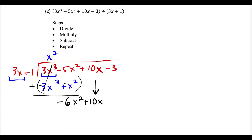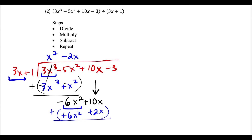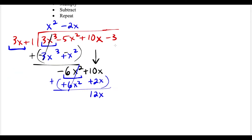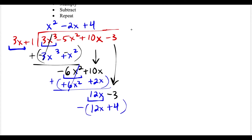Dividing negative 6x squared by 3x gives minus 2x. Then minus 2x times 3x is minus 6x squared, and minus 2x times 1 is minus 2x. We subtract, changing the operation to addition and flipping signs — these cancel, and 10x plus 2x makes 12x. Bring down minus 3. Now 12x divided by 3x gives plus 4. Then 4 times 3x is 12x and 4 times 1 is 4. Subtracting again with keep, change, change: 12x and negative 12x cancel, and negative 3 plus negative 4 makes negative 7 — our remainder. The answer is x squared minus 2x plus 4, minus 7 over 3x plus 1.